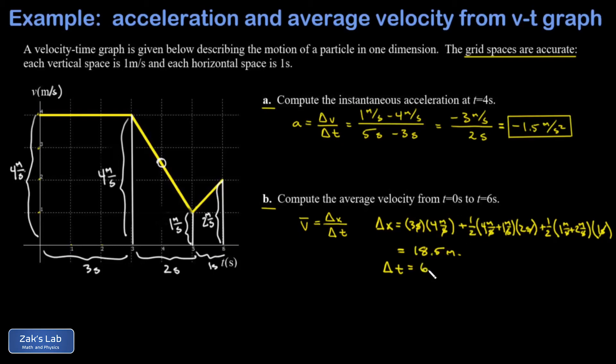Then just a little reminder of what the total change in time is on this interval. T went from zero to six so delta t is equal to six seconds, and I can finally write down my average velocity. Displacement was eighteen and a half meters, time six seconds, and I get 3.08 meters per second.